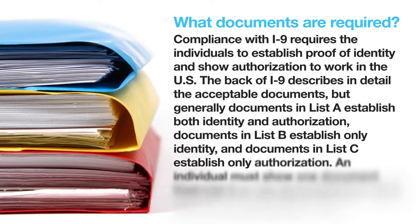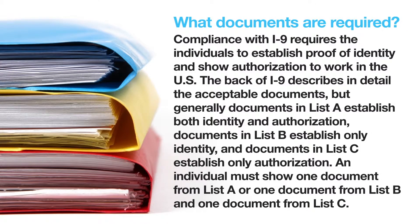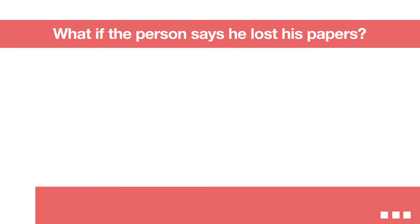What documents are required? Compliance with I-9 requires the individual to establish proof of identity and show authorization to work in the U.S. The back of the I-9 describes in detail the acceptable documents. Generally, documents in List A establish both identity and authorization. Documents in List B establish only identity, and documents in List C establish only authorization. An individual must show one document from List A, or one document from List B and one document from List C.